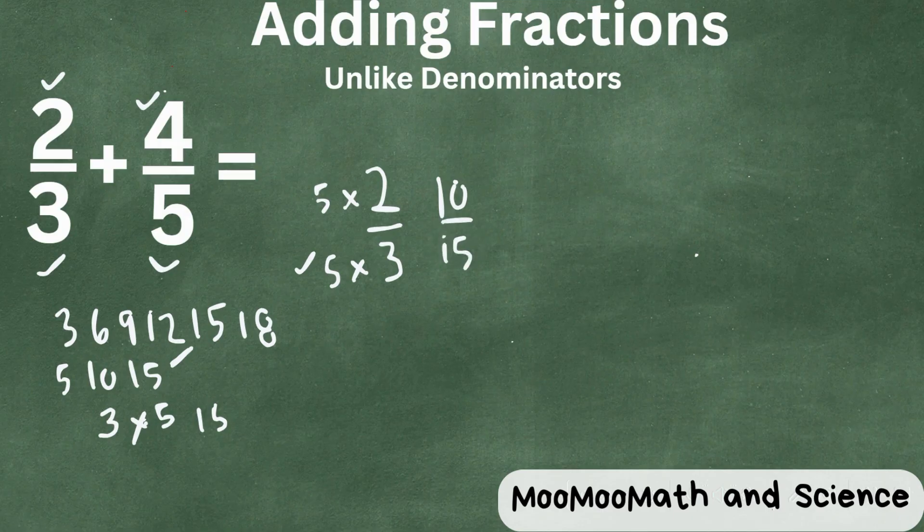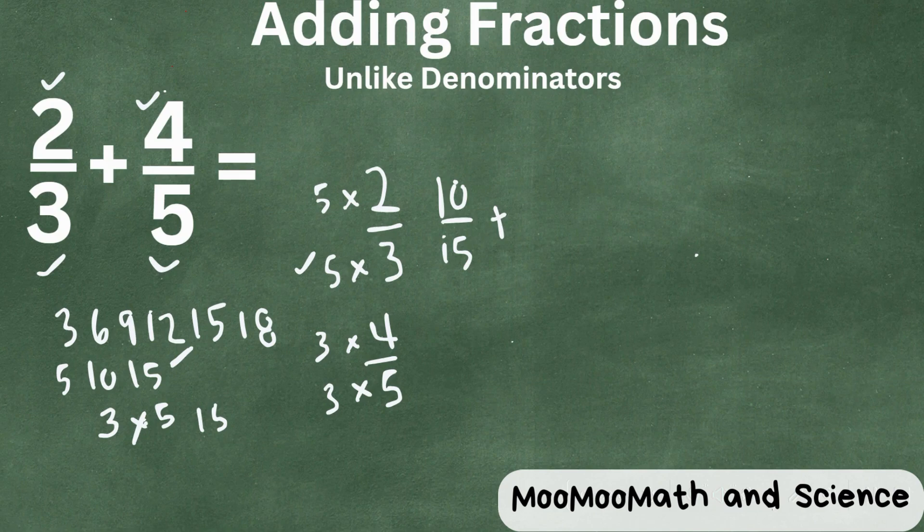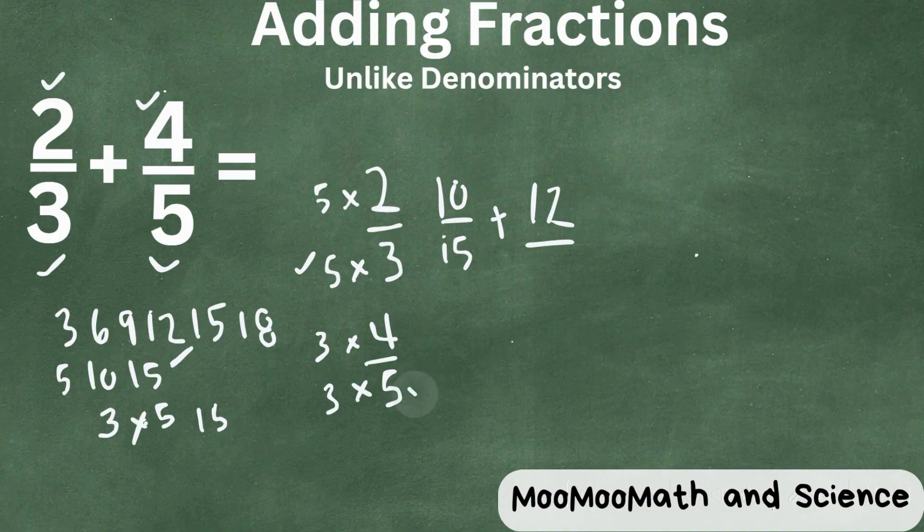Now we're going to do the same for four-fifths. So with this, five goes into fifteen three times. We're going to multiply the numerator and the denominator by the same number. So four times three is twelve, and five times three is fifteen.